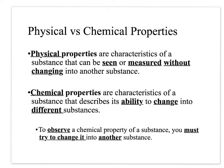Physical versus chemical properties. Physical properties are characteristics of a substance that can be seen or measured without changing it into another substance. However, a chemical property describes the substance's ability to change into something else. The fact that nothing happens — a failure to react — is itself a chemical property. To observe a chemical property, you have to try to change the substance into another substance, so something new must be created.